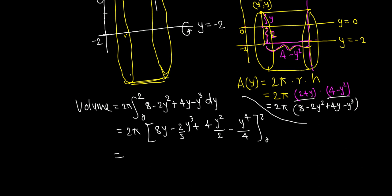So 2π outside. 8 times 2 is 16, minus 2 thirds times 2 cubed. 2 cubed is 8, 8 times 2 is 16 thirds, plus 2 divides 4, 2 times 2 squared, 2 times 2 squared is 4 times 2 is 8, minus 2 to the 4 is 16 divided by 4 is 4. And whatever we get, that cubic units is the answer.